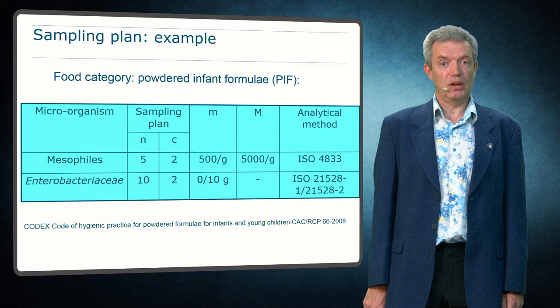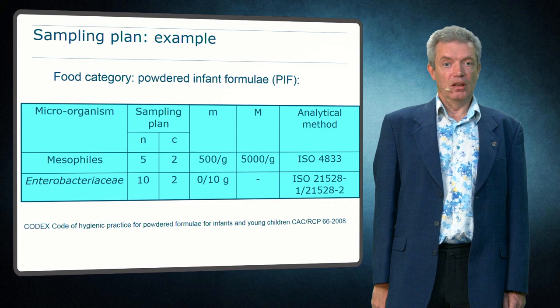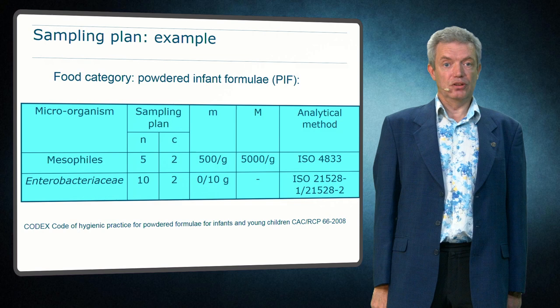It even specifies two concentration limits. In this case it is a three-class sampling plan with a lower limit small m and a higher limit big M. No samples of the five are allowed to be above 5000 per gram, two samples are allowed to be between 500 and 5000, and the others have to be below 500.